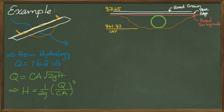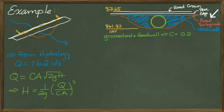So there's our pipe selection. I'm going to assume that we have a head wall. So we have a grooved in pipe with a head wall, which gets us a coefficient of 0.2, a minor loss entrance coefficient of 0.2.